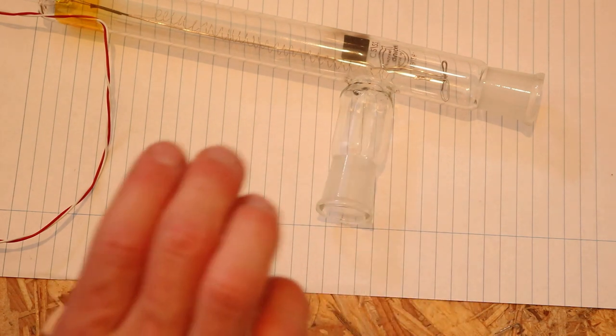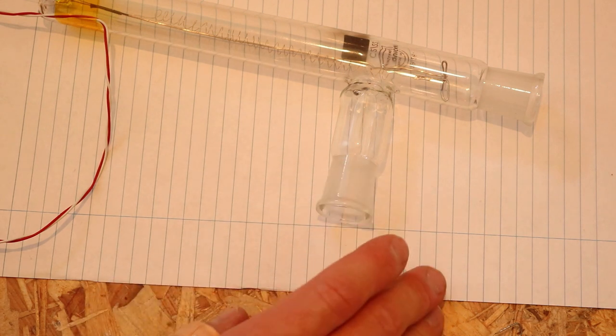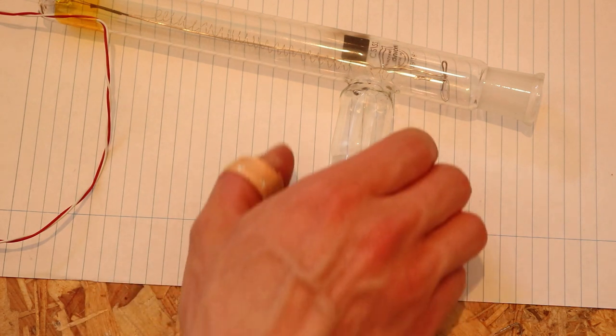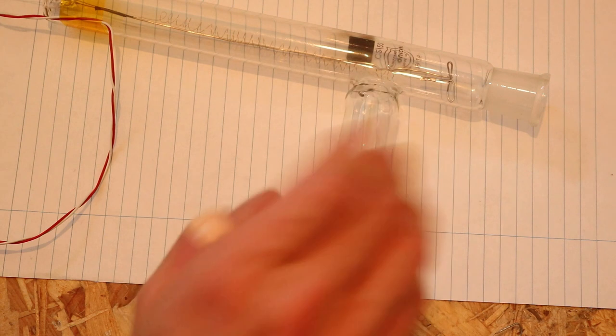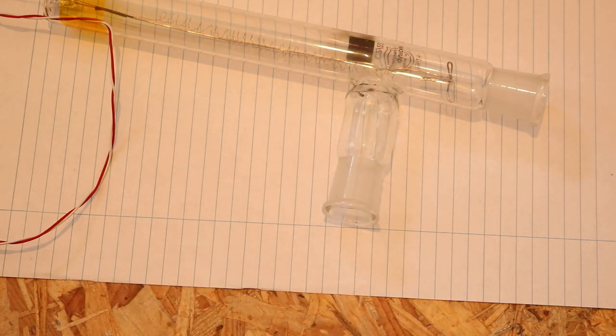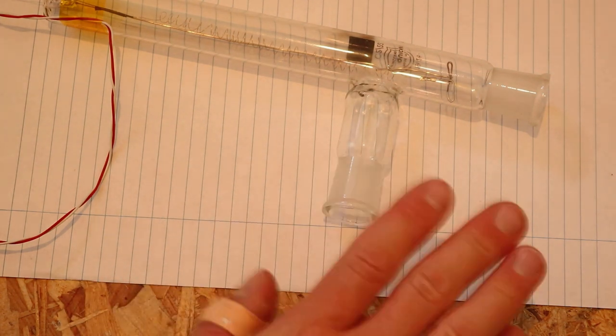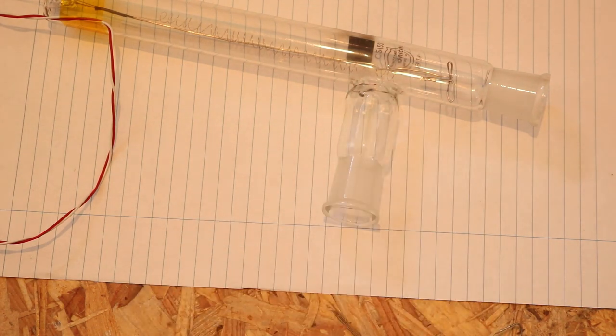So it might implode if it's connected to the vacuum pump. The glass is pretty thick but it's still not great if it's not completely annealed and there's still stress in the glass, so it's probably better to have this constructed out of stainless steel tubing.